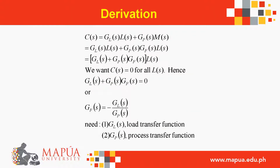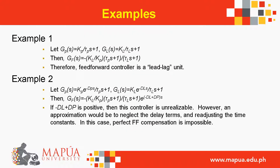This is the derivation. For example number one: let Gp(s) = Kp / (τp·s + 1) and GL(s) = KL / ((τp·s + 1)(τL·s + 1)). Therefore the feedforward controller is a lead-lag unit.